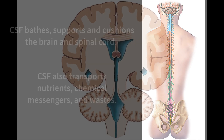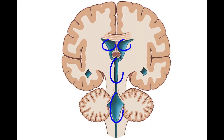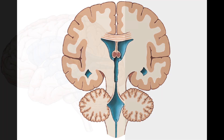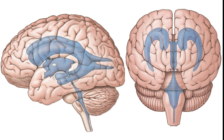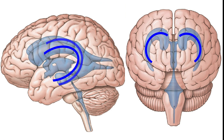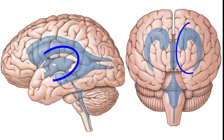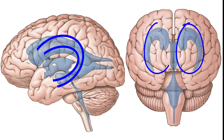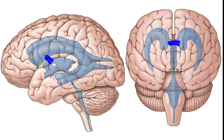CSF forms deep within the brain in open spaces called ventricles. To understand this, let's begin by studying this network of chambers. Within each cerebral hemisphere, there is a horn-shaped space called a lateral ventricle — a left lateral ventricle and a right lateral ventricle. Each lateral ventricle contains a channel called an interventricular foramen that communicates with the third ventricle, a space within the diencephalon.